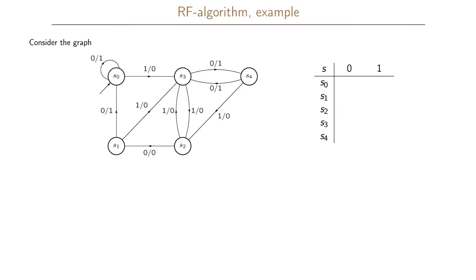For S0: with input 0 we stay in state S0 and output 1; with input 1 we go to state S3 and output 0. For S1: with input 0 we go to state S0 and output 1; with input 1 we go to state S3 and output 0.